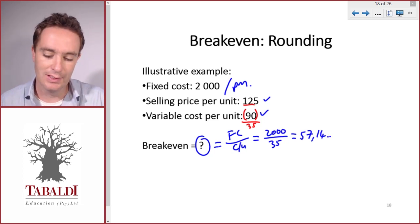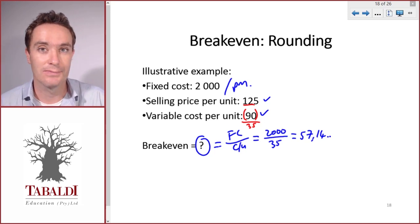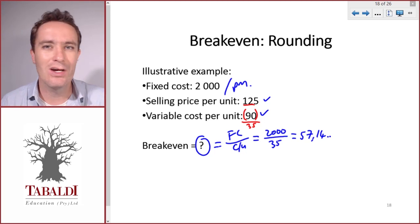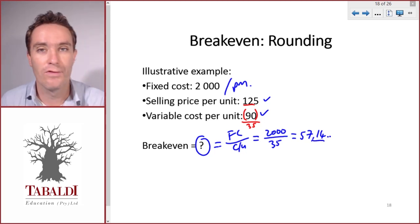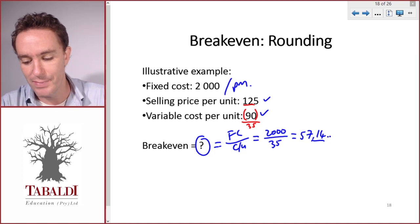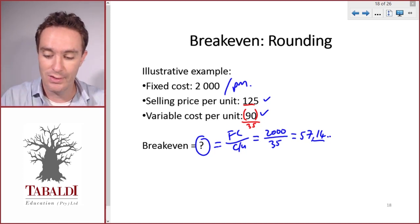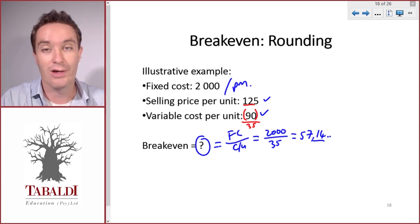The question now is how do we round the answer or do we leave it at 57.14? We can't sell 0.14 of a bicycle. No one's going to buy that portion of a bicycle. We need to sell whole bicycles. Normally in mathematics we round to the nearest whole number, so if it's less than 0.5 we'll round down.